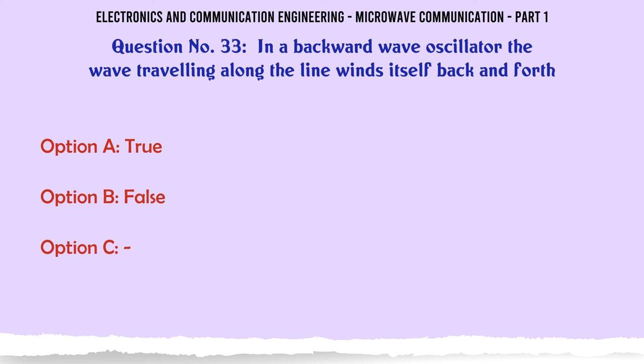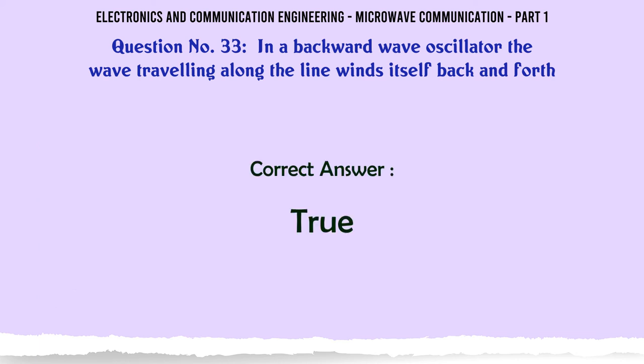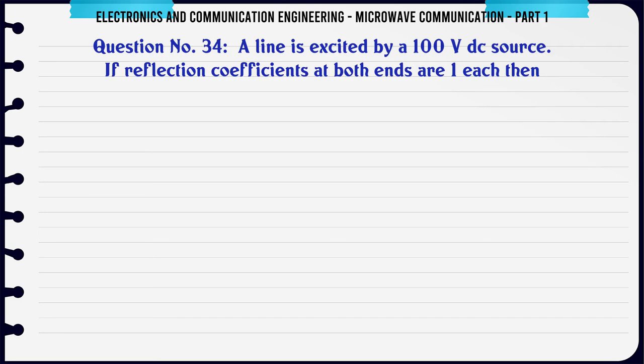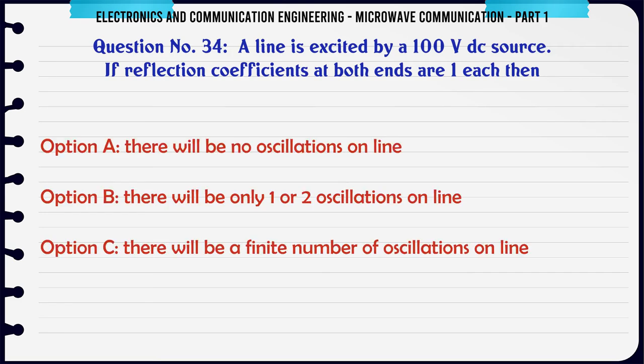In a backward wave oscillator the wave traveling along the line winds itself back and forth: A. True, B. False. The correct answer is True.